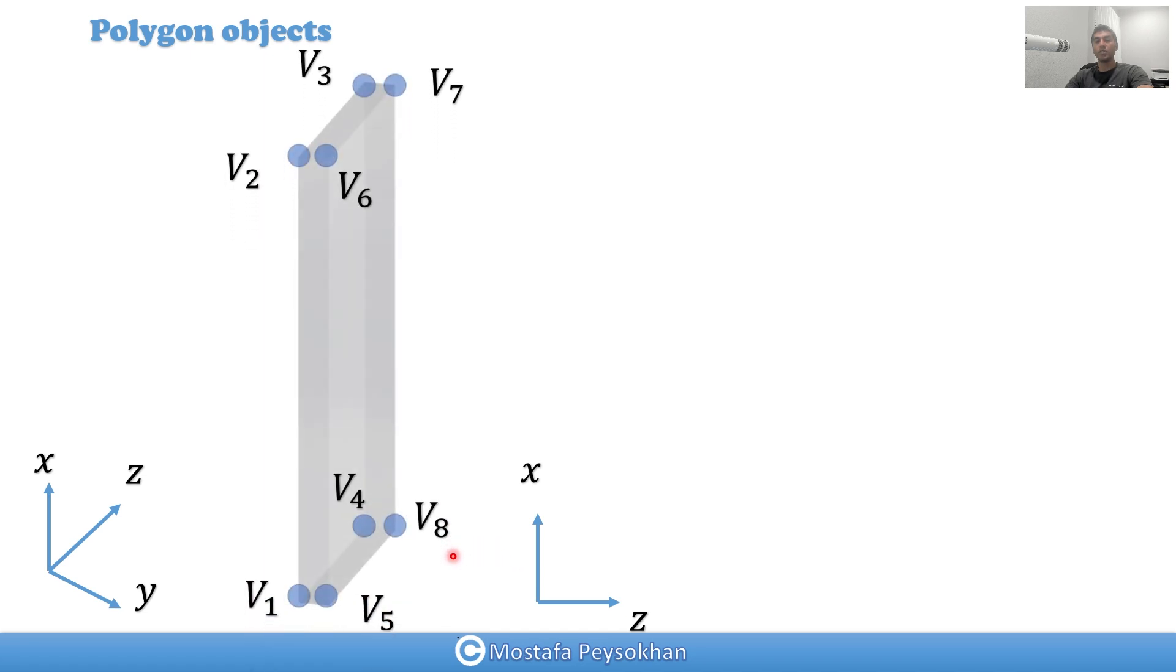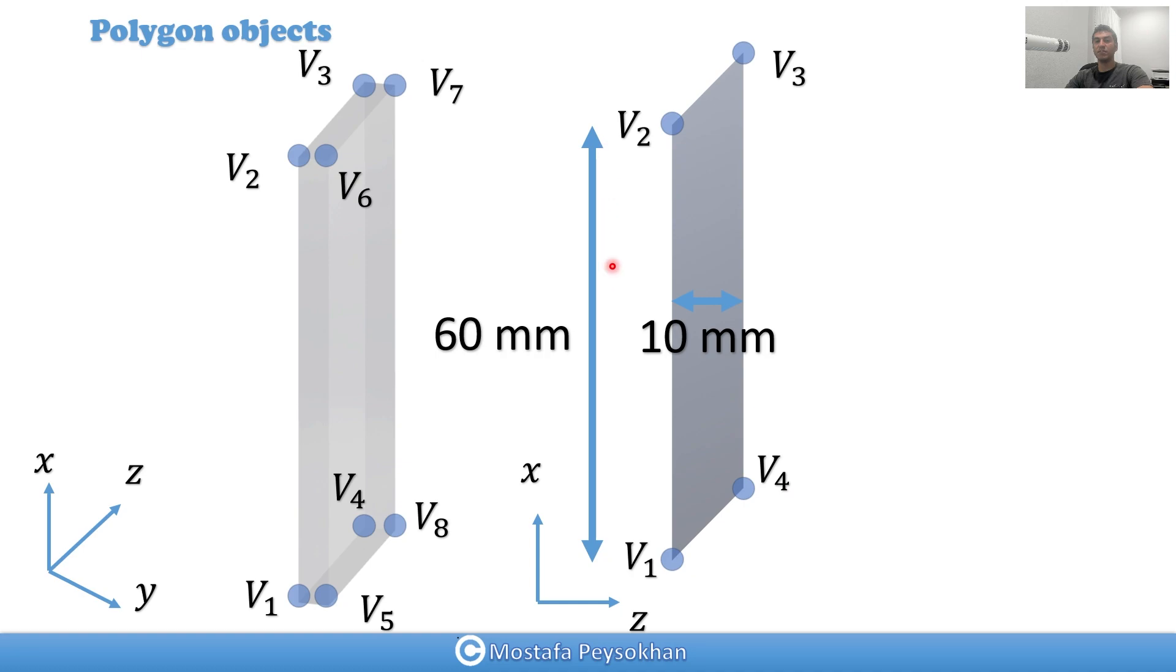The first step: for each vertex, you put a number or name for yourself. Right now for the backside, I'm going to put V1, V2, V3, V4, all of them on the backside. And the front side, that I'm moving in Y direction, is V5, V6, V7, and V8. This is XZ coordinate. When you look at it from the top, you can see V1, V2, V3, V4. Based on what I mentioned before, the dimension is 60 by 10.